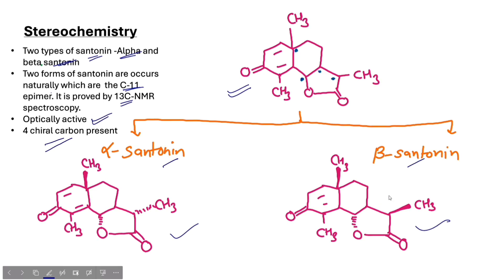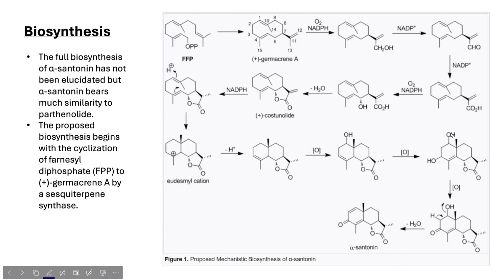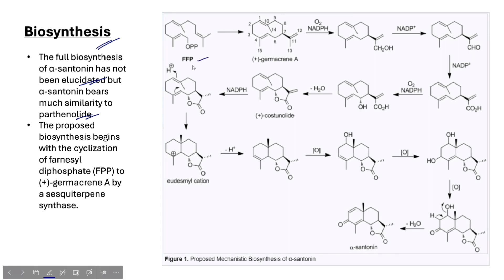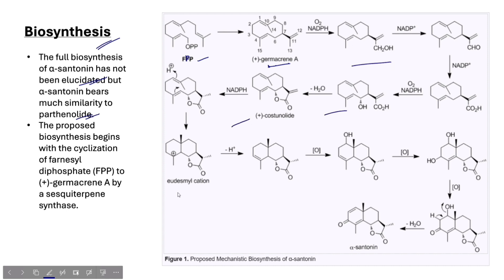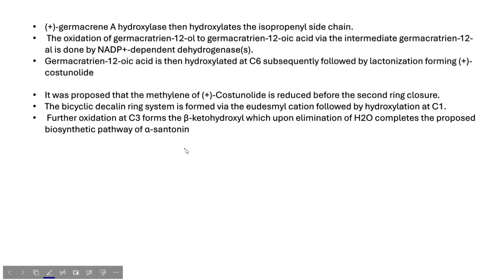The next and final topic is biosynthesis. When we talk about biosynthesis, the biosynthesis pathway of Santonin is not fully determined. But alpha-Santonin shows similarity with parthenolide. The biosynthesis starts with farnesyl diphosphate, FPP. FPP changes into germacrane, and then through a series of reactions involving eudesmyl cation, and finally we see Santonin formed.